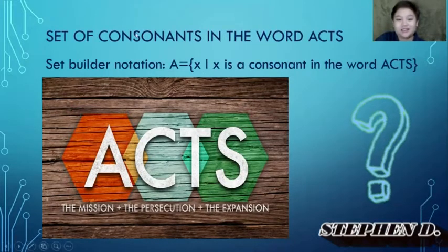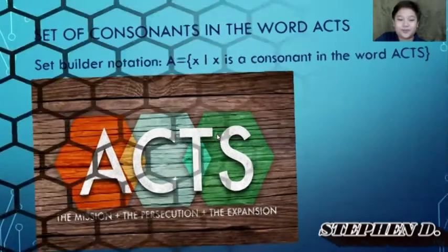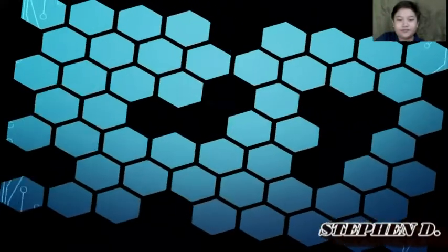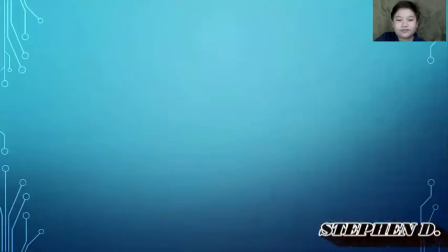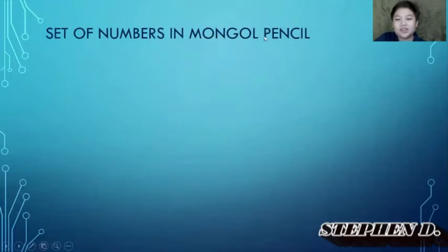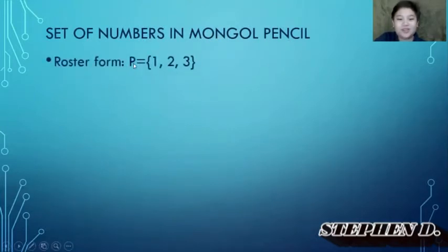That's how you write it in set builder notation. Set of numbers in the Mongol pencil. The roster form is: P = {1, 2, 3}.